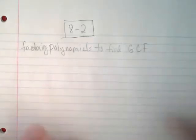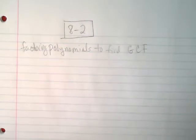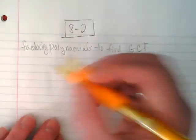So the actual specific objective today is factoring polynomials to find their GCF. Basically, we're going to do the opposite of distributive property. So when they're finished, they will look like something that needs to be distributed.